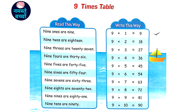9 3's are 27, 9 4's are 36, 9 5's are 45.